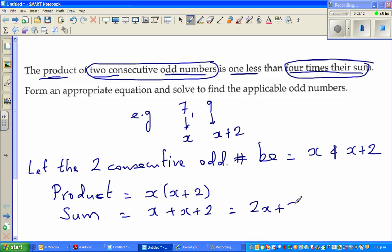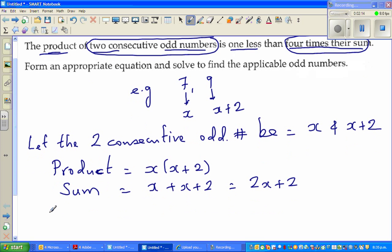Four times the sum of this number. The sum is x plus x plus 2, which is 2x plus 2. So if you want to write four times the sum, that means 4 times 2x plus 2, which is 8x plus 8.